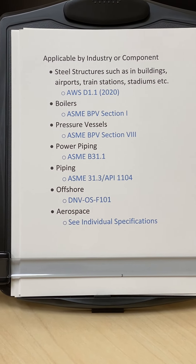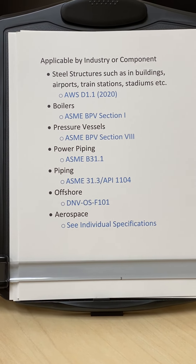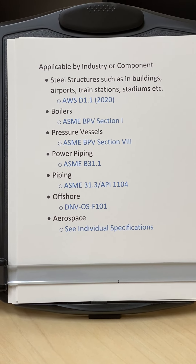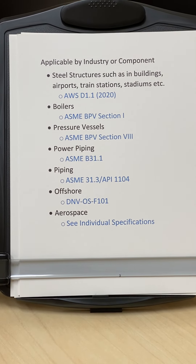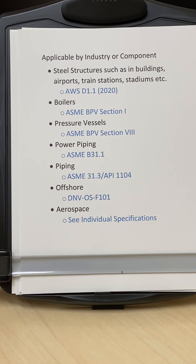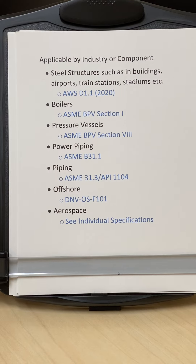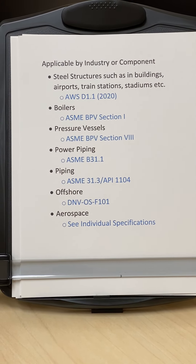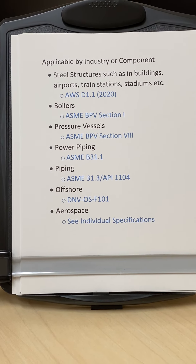If we are working on boilers, the applicable code is ASME Boiler and Pressure Vessel Code Section 1. For pressure vessels it is ASME Section 8. For power piping in a power plant it is ASME B31.1. For process piping in refineries and chemical plants, that is B31.3. For onshore pipelines it is API 1104.